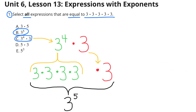C is also equal because that's 3 to the 4th power times 3, which is the same as 3 times 3 times 3 times 3 times 3, and that's 3 to the 5th power. A is not equal because that's just 3 times 5, which is 15. D is not equal — that's just 5 times 3, which is 15. And E certainly isn't equal because that's 5 to the 3rd power and not 3 to the 5th power.